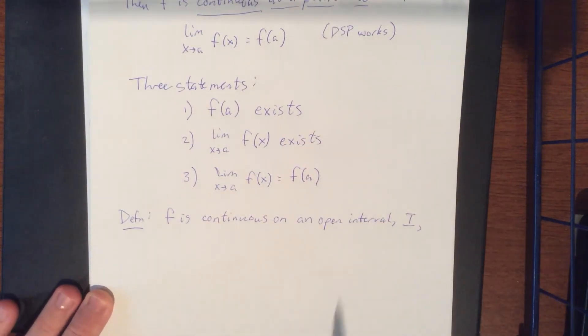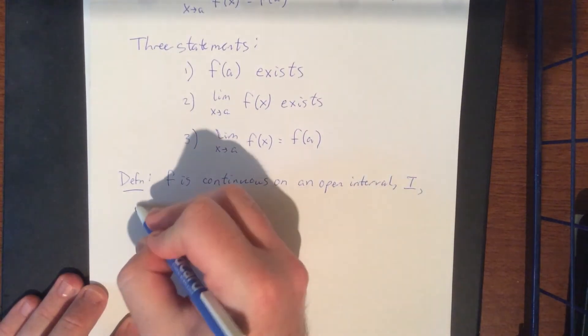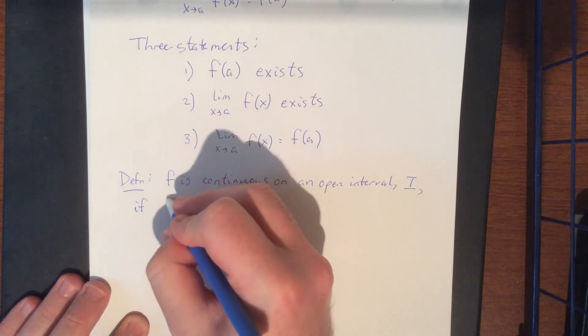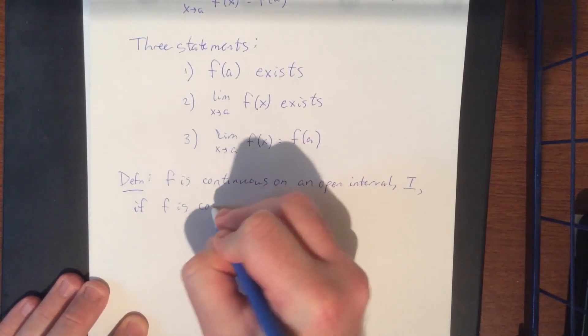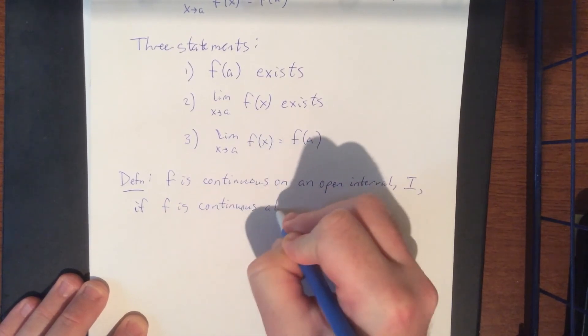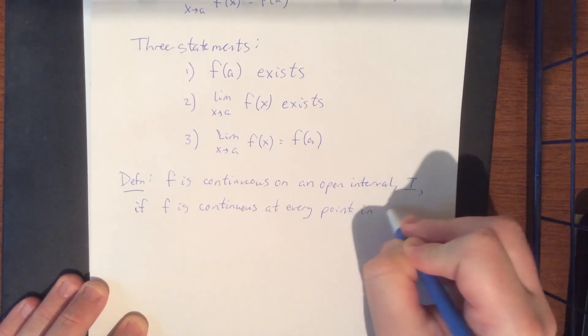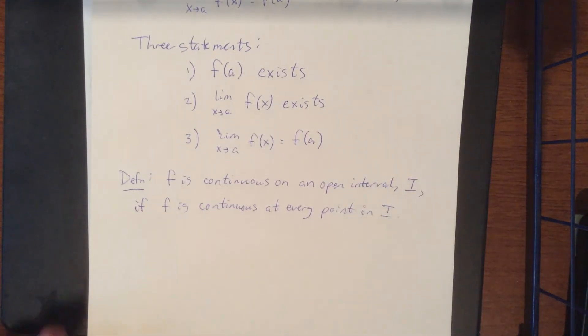So we'll say that f is continuous on an open interval I if f is continuous at every point contained within the interval I.